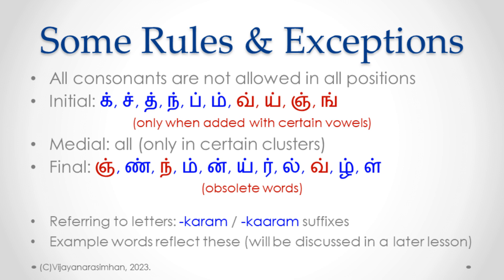When referring to a particular letter, we add certain suffixes. Typically we use '-karam': so Ka becomes 'Kagaram', Ma becomes 'Magaram'. For long forms: Ka becomes 'Kaharam', Ma becomes 'Maharam'. So Agaram, Aharam, Igaram, Iharam — like that. In spoken form, people also use an '-ana' or '-avanna' suffix: Ana, Avanna, Kana, Kavanna, Kina, Kiana.